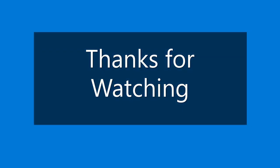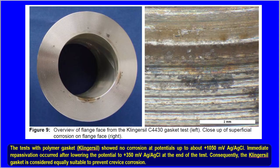The figure on the left side shows an overview of the flange face from the Klinger Seal C4430 gasket test, and the right side shows a close-up of superficial corrosion on the flange face. The test with the polymer Klinger Seal gasket showed no corrosion at potentials up to about +1050 mV Ag/AgCl electrode. Immediate repassivation occurred after lowering the potential to +350 mV Ag/AgCl at the end of the test. Consequently, the Klinger Seal gasket is considered equally suitable to prevent crevice corrosion.